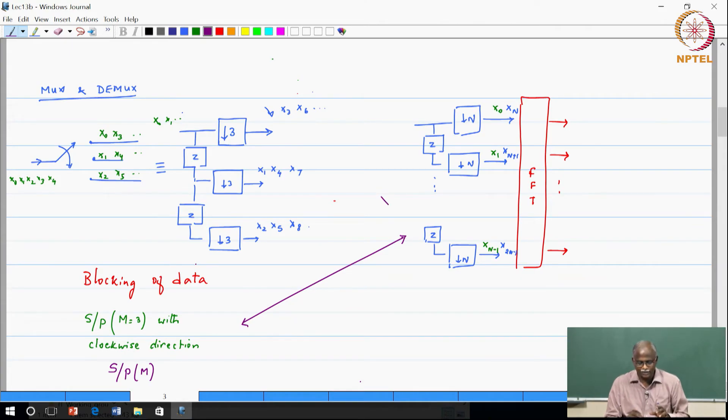So you would do a multi-rate structure which is indicated in this manner, which would be exactly what we are trying to implement in this case so that you can get the data samples being fed in appropriately in the form of blocks.